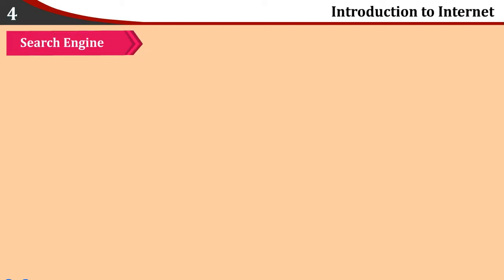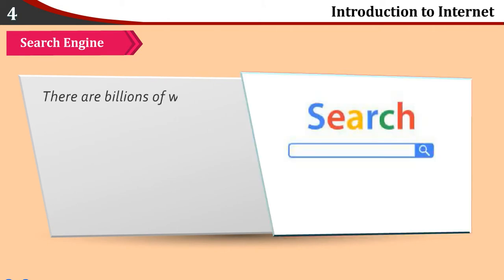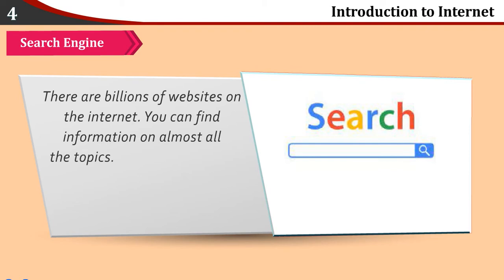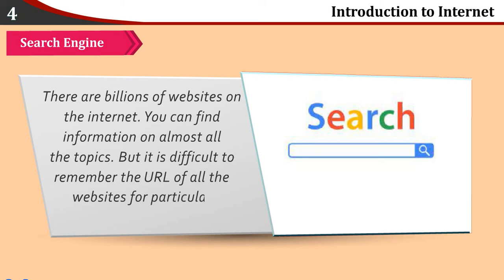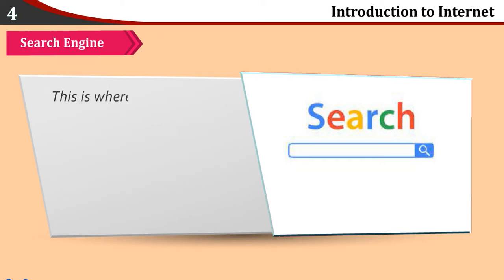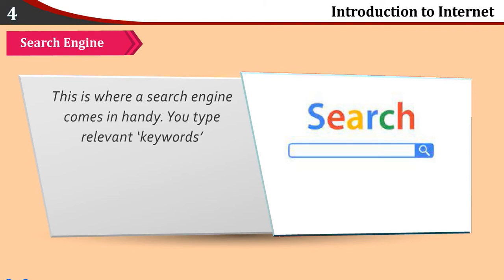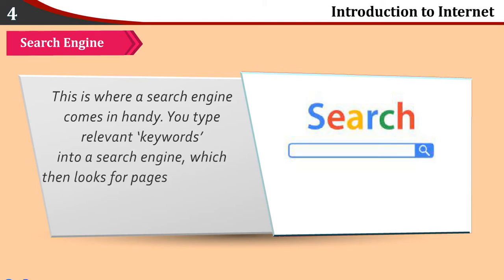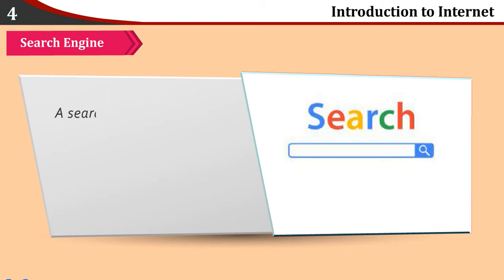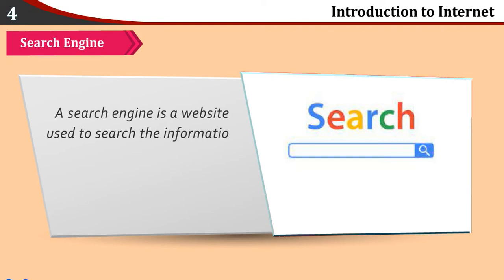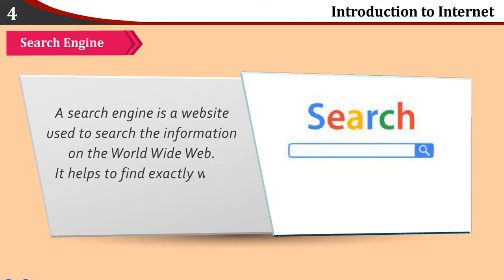Search Engine. There are billions of websites on the internet. You can find information on almost all the topics. But it is difficult to remember the URL of all the websites for a particular topic. This is where a search engine comes in handy. You type relevant keywords into a search engine, which then looks for pages throughout the internet that contain those words. A search engine is a website used to search the information on the World Wide Web. It helps to find exactly what you are looking for.